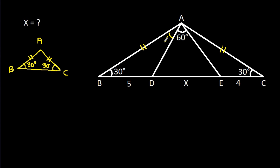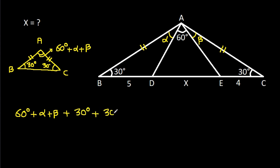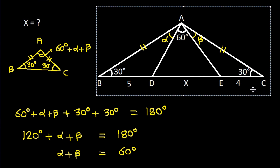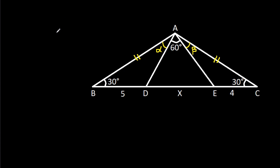Suppose this angle is alpha and this angle is beta. Then this angle will be 60 degrees. So alpha plus beta plus 30 degrees plus 30 degrees equals 180 degrees, giving 120 degrees. Therefore alpha plus beta equals 60 degrees.